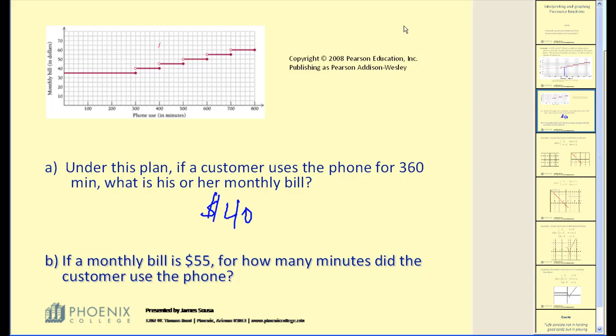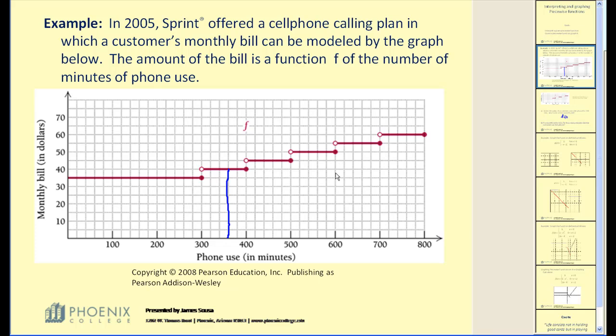I would like to go back and take a look at another case before we move on to the next question. What if, for example, you use 700 minutes? As you go up to the graph, notice how there's a closed point here and there's an open point here. Where is the function defined? Remember the function is defined at the closed point, which would result in a y value of $55. The function is not defined at the open points.